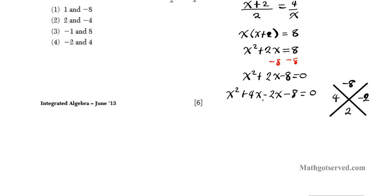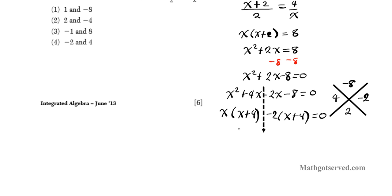Break it down to center and factor by grouping. From the first two terms, I'll factor out an x, giving x plus 4. And from the last two, I'll factor out negative 2, leaving x plus 4 equals 0. Now we factor again — x plus 4 is common on both sides, so we factor out x plus 4, and we're left with x minus 2 equals 0.